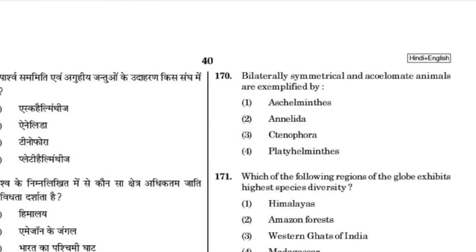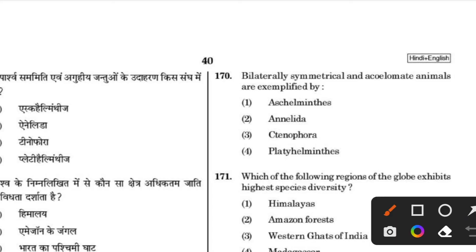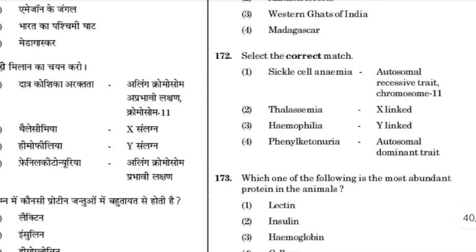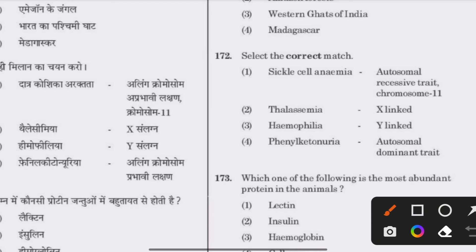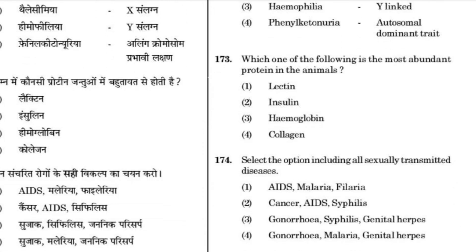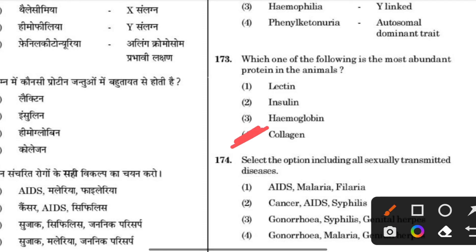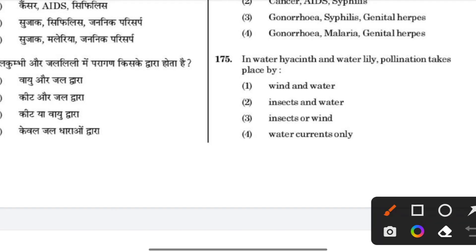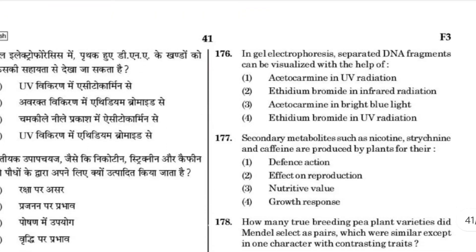Which of the following statements are true for phylum Chordata — the answer is true. Bilaterally symmetrical and acoelomate animals are exemplified by Platyhelminthes. Which region of the globe exhibits the highest species diversity — Amazonian rainforest. Sickle cell anemia is an autosomal recessive disorder on chromosome number 11. The most abundant protein in animals is collagen and in the whole biosphere is RuBisCO.